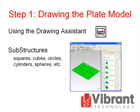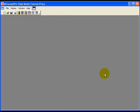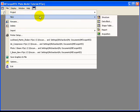Step 1: Drawing the Plate Model. 3D structure models with simple geometries such as squares, cubes, circles, cylinders, spheres, etc. are easily built in EmiScope VES by using the drawing assistant. More complex models can be built up by using several simpler geometric structures called substructures. To begin building a new structure model, execute the File > New Structure command.